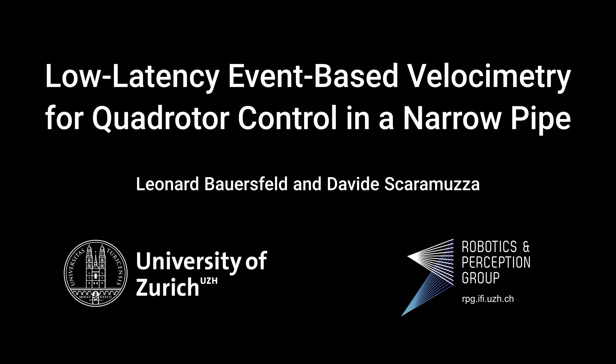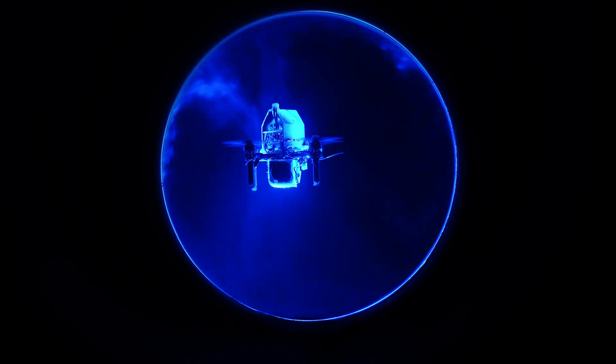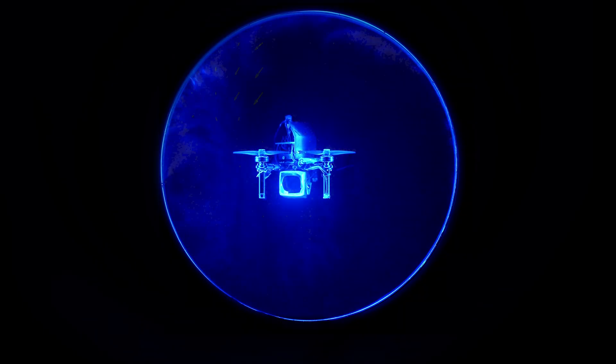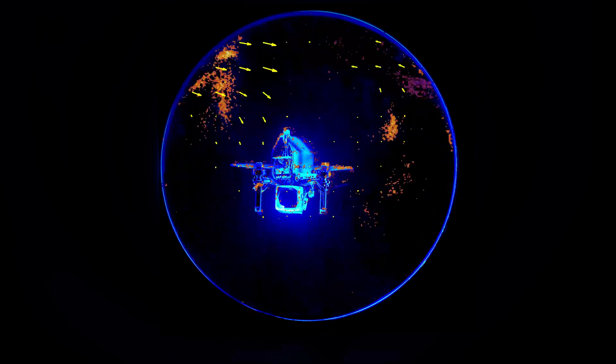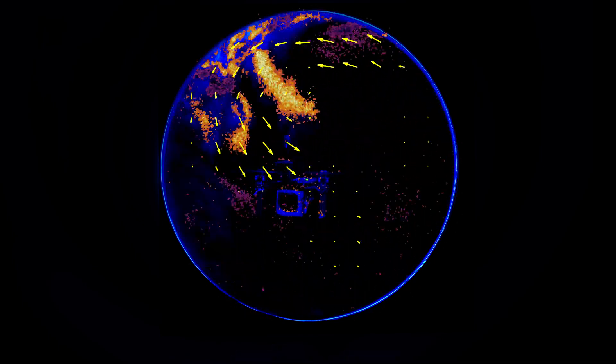Flying quadrotors inside confined spaces is challenging since recirculation of the propeller downwash causes strong aerodynamic disturbances. In this work, we demonstrate how real-time flow velocity estimation with event-based smoke velocimetry can be used to estimate the disturbance and improve the control performance of the drone.